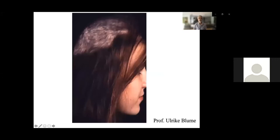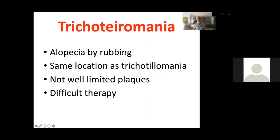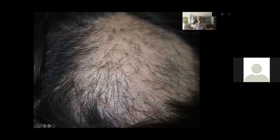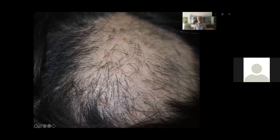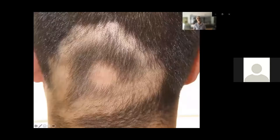To clarify the terminology: in trichotillomania, 'tillo' means to pull; in trichotemnomania, 'temno' means to cut; in trichoteromania, 'tero' means to rub. If you frenetically rub your hair, you might break it and produce areas of alopecia. The plaques are not so well limited, and the location is usually the same as in trichotillomania — it's more comfortable to rub the back than the front. Trichotillomania: hair plucked; trichotemnomania: hair cut; trichoteromania: hair rubbed.